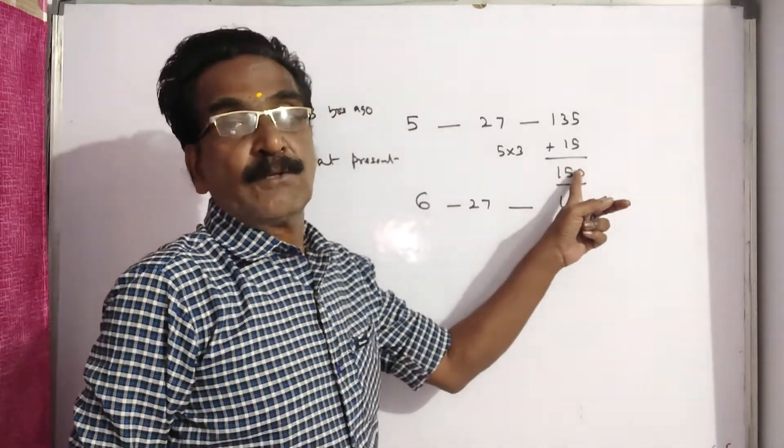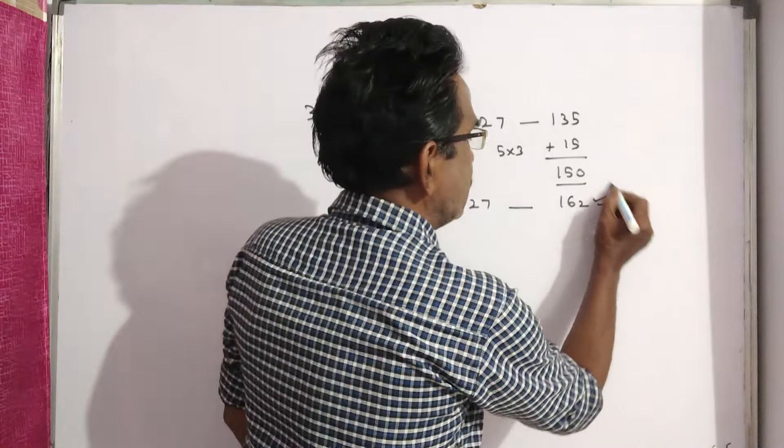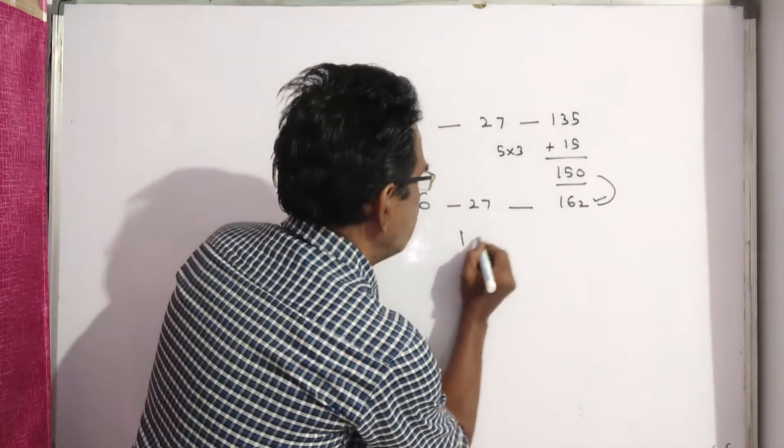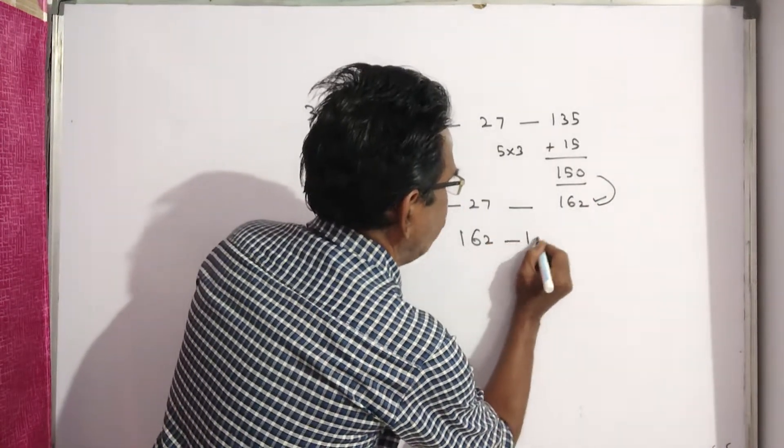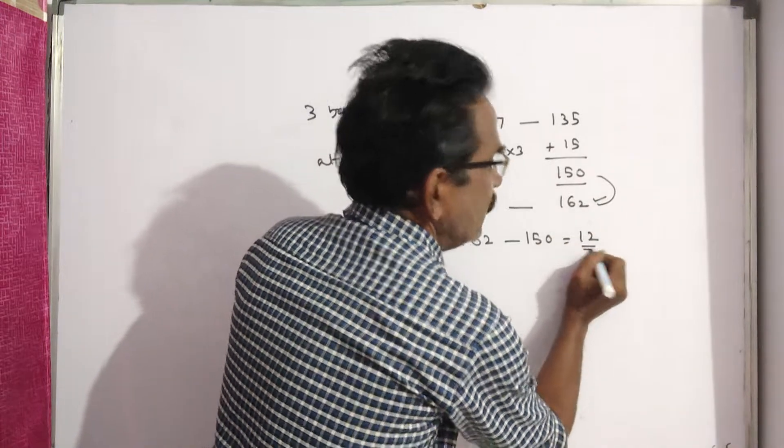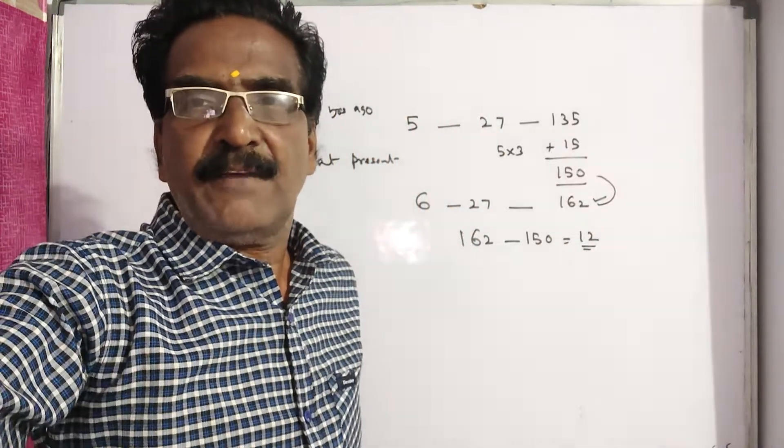This is the total age of all five members. So 162 minus 150 gives the age of the child. Okay friends, thank you. Have a nice day.